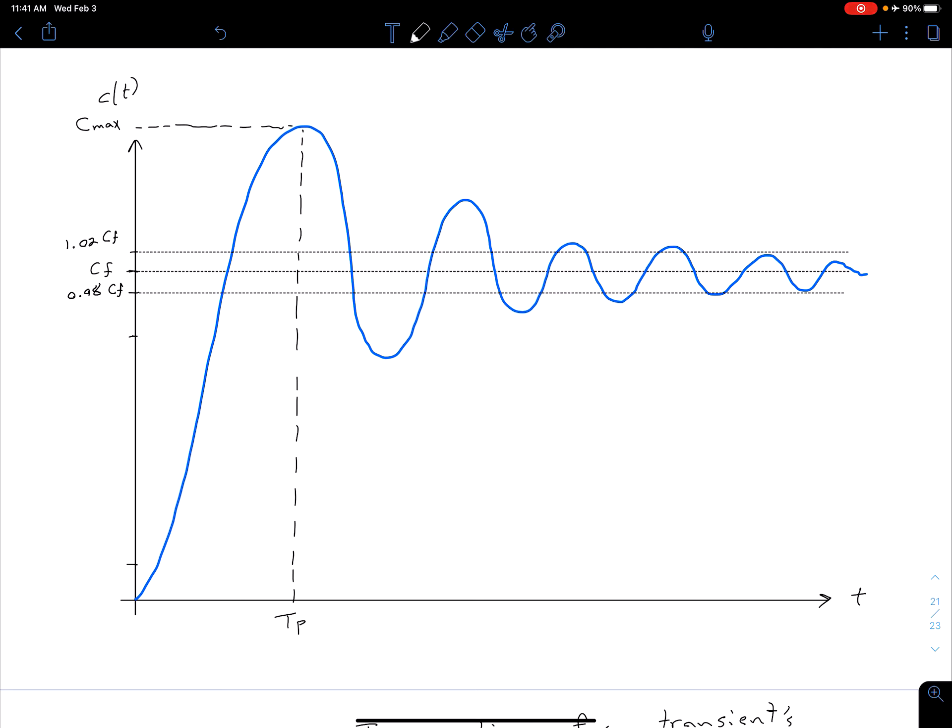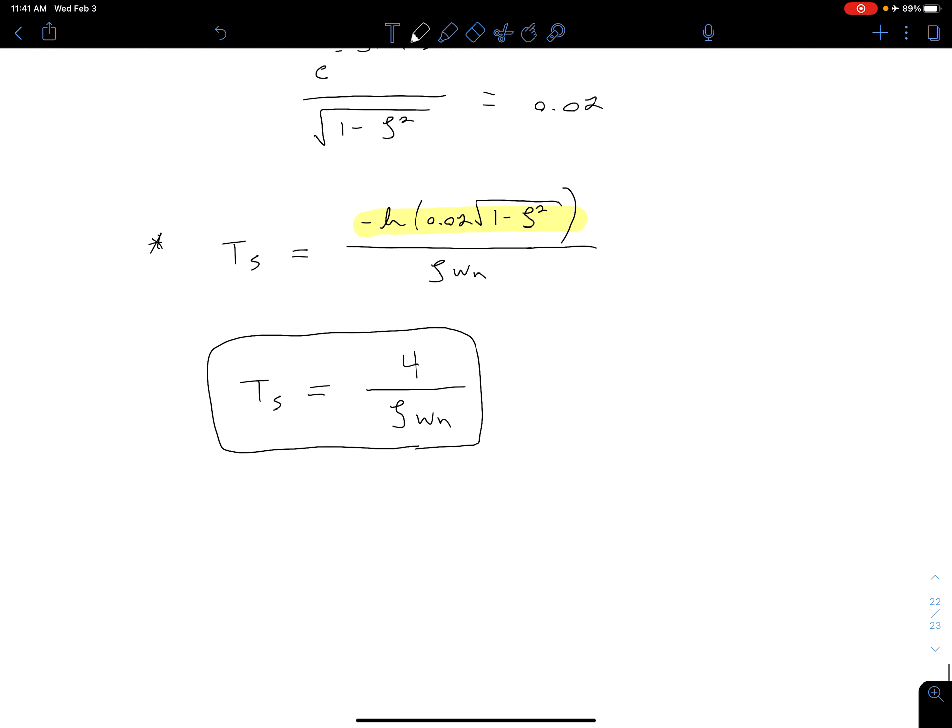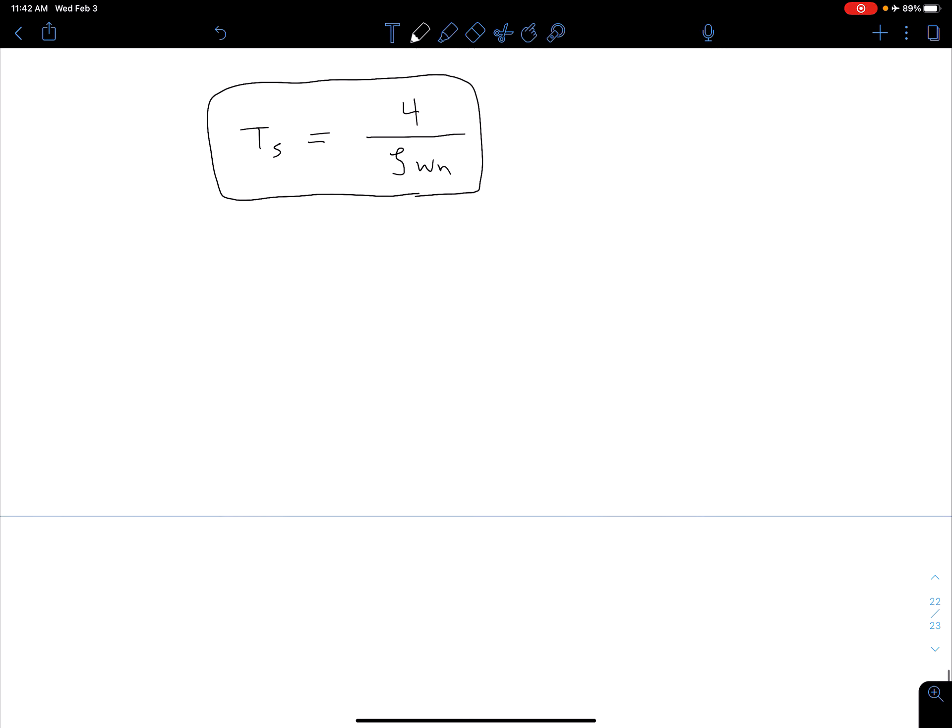If we look here, we see this point right here, it enters into that range, and then beyond that point, it no longer comes back outside. So that would be our settling time. So right about here would be our settling time, TS. You can see how that settling time would change depending on what percentage we use for a variation from CF. If we have a 1% variation from CF, then our settling time would be longer. A 5% variation instead of 2% would be a shorter settling time. So it's important to keep in mind what settling time you're using.